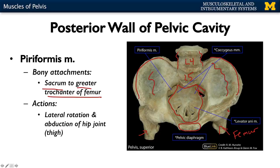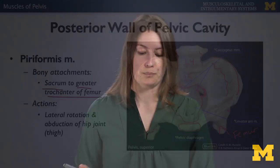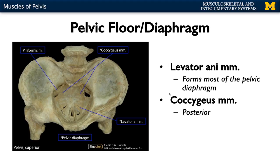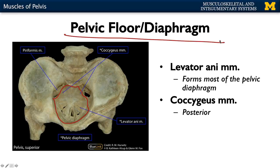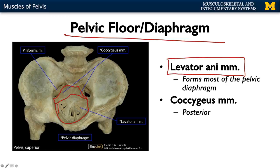One thing to note here: you see this space? This is your greater sciatic foramen. The piriformis is actually going from the sacrum through the greater sciatic foramen to attach to the greater trochanter. Now, the rest of the muscles in this region — these muscles right here — we refer to as the muscles of the pelvic floor or diaphragm. By far the most important of these is the levator ani muscles, which form the majority of this region.